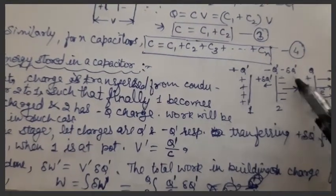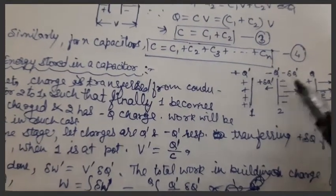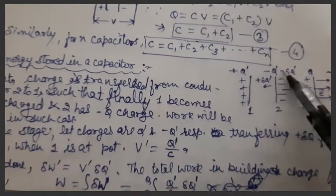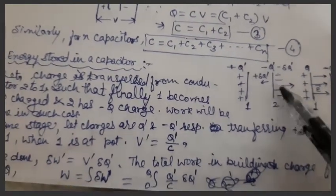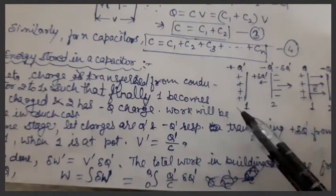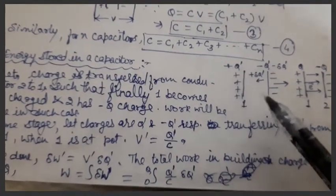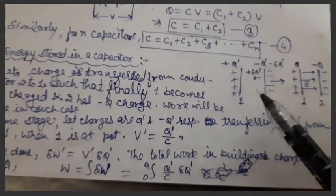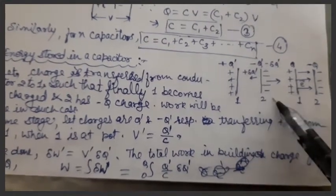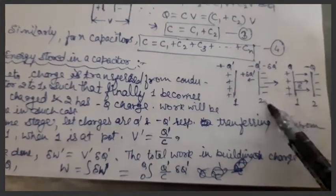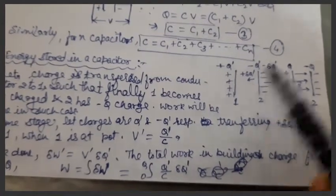Because positive charge is decreasing on two, negative charge will increase. So negative charge keeps building up on conductor two and positive charge keeps building up on conductor one. You can also understand this as transferring electrons from one to two, due to which negative charge keeps building on two while positive charge keeps building on one.